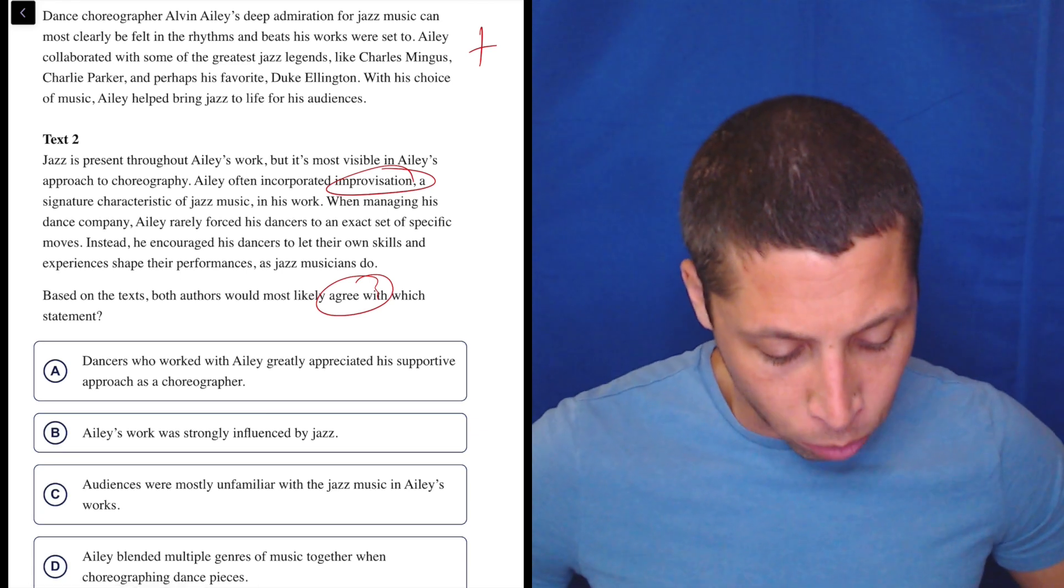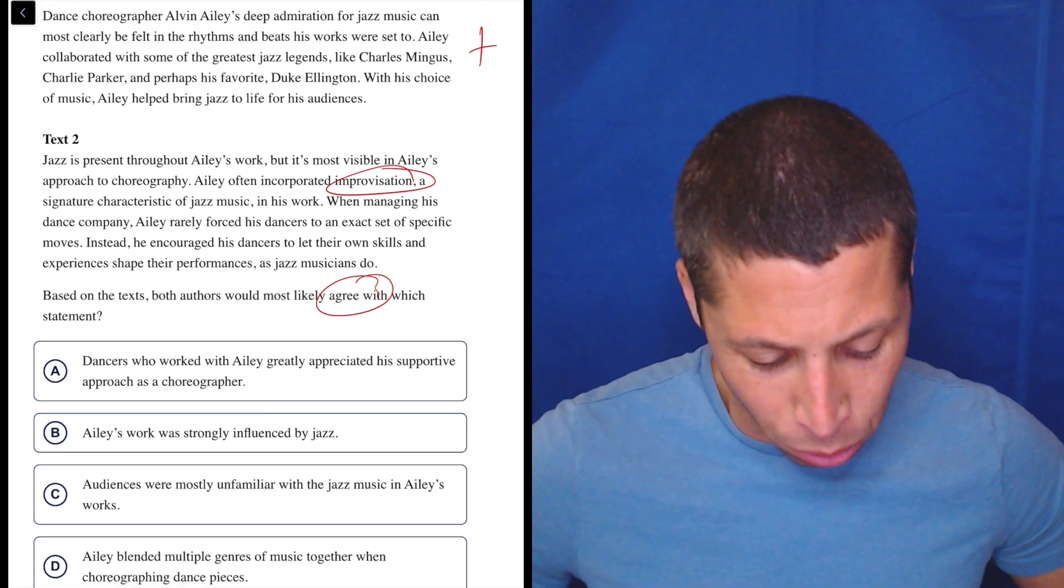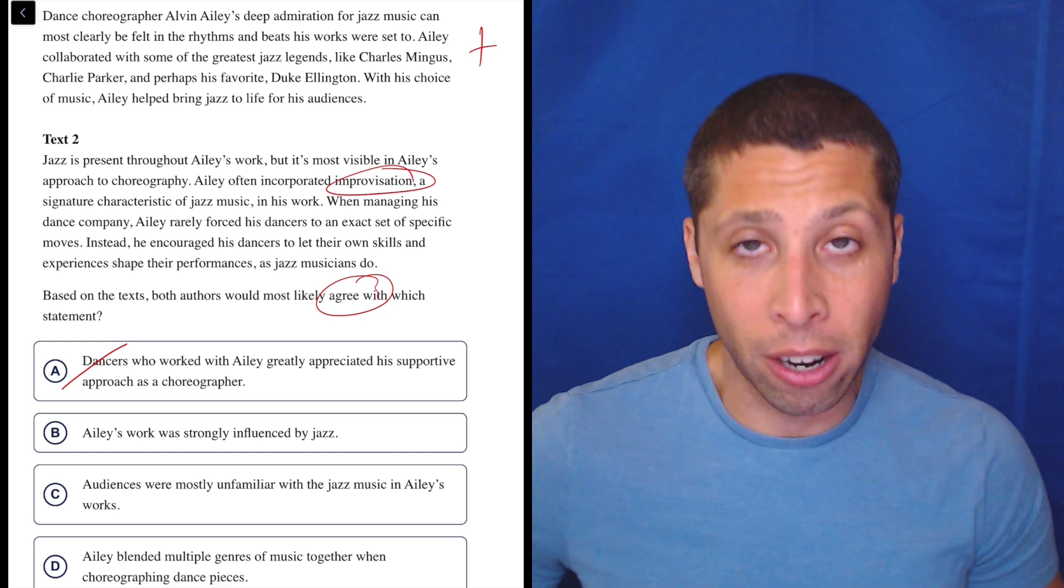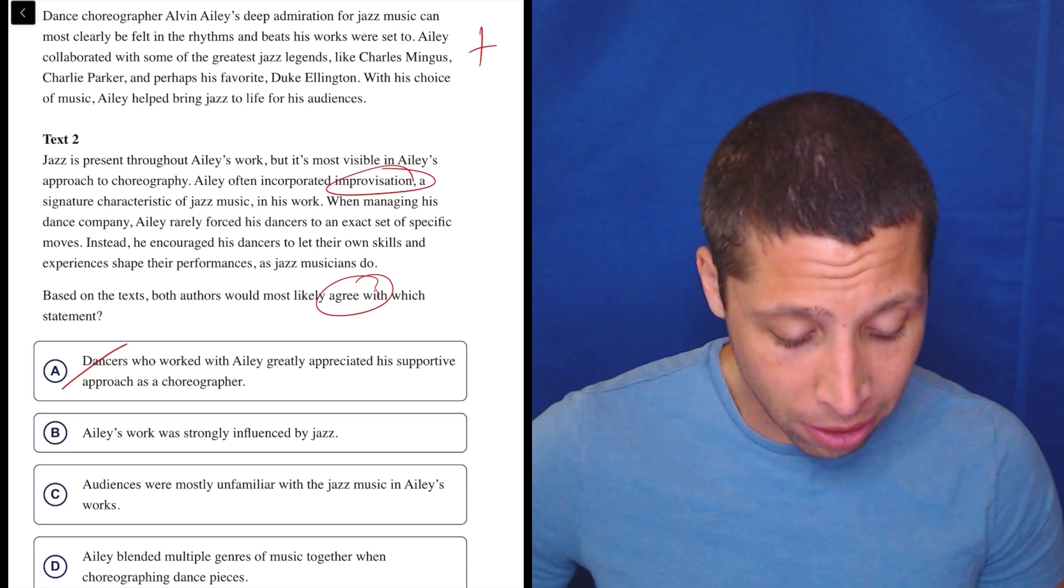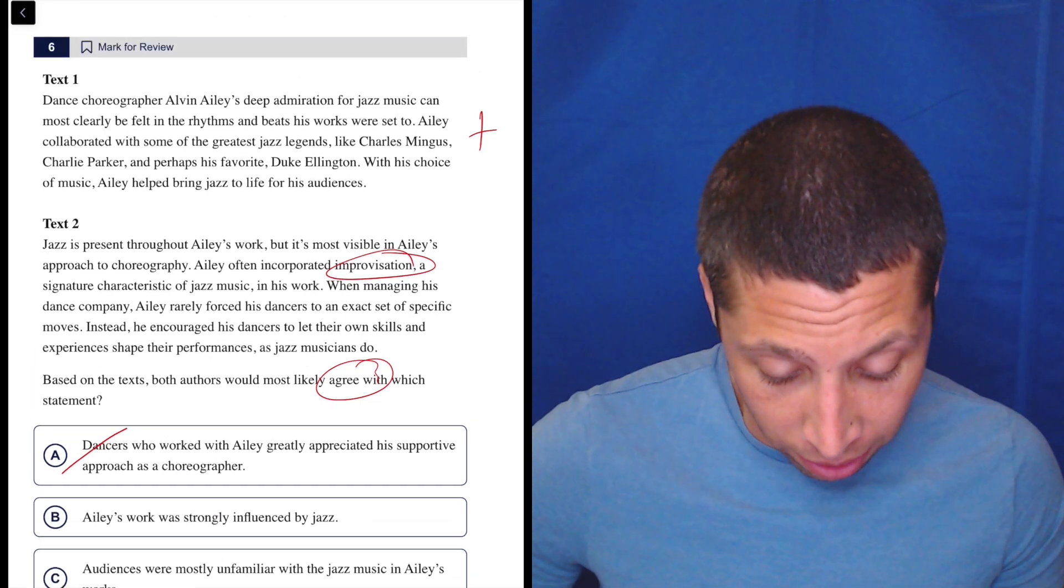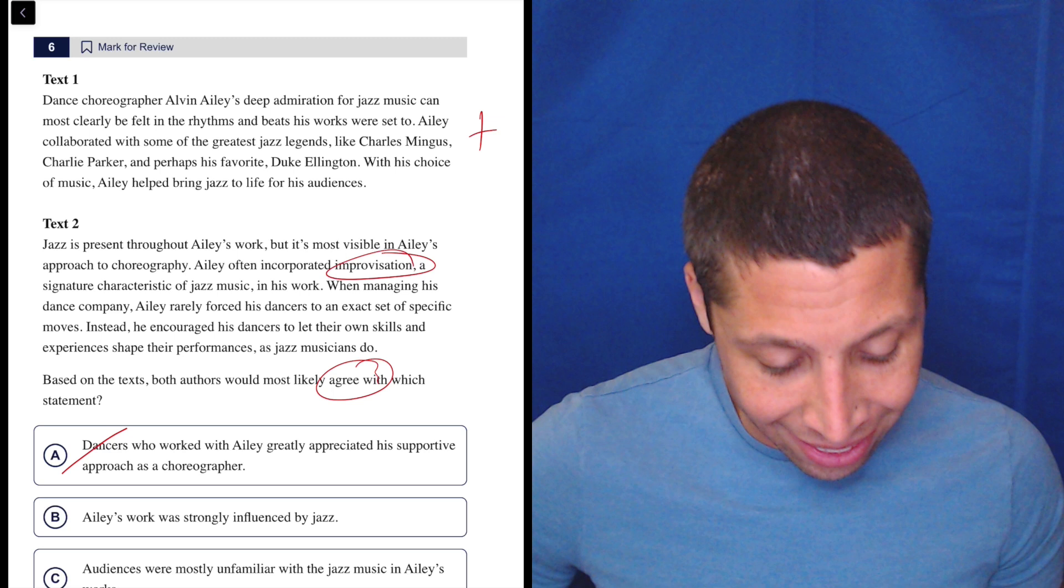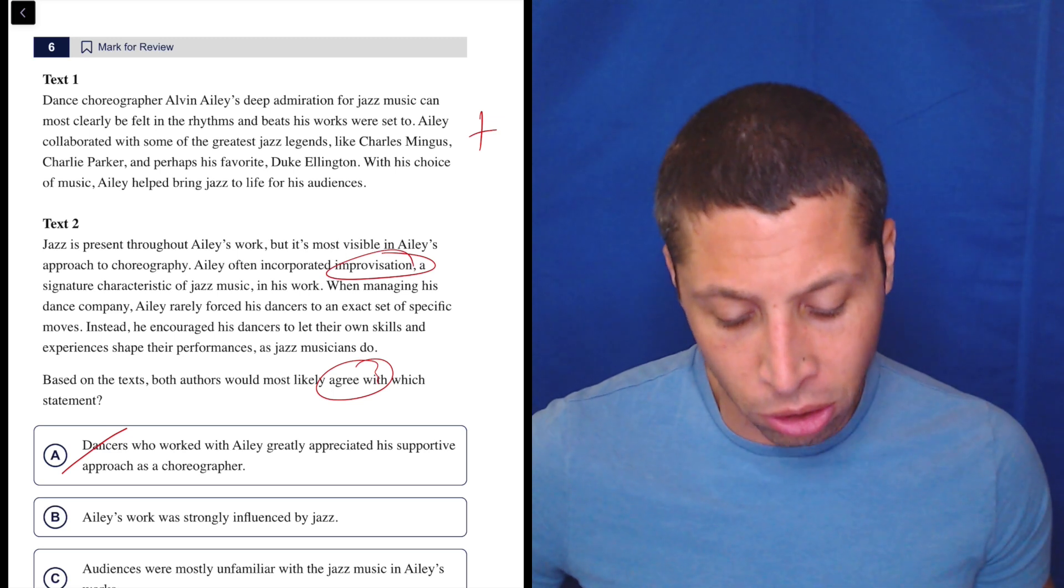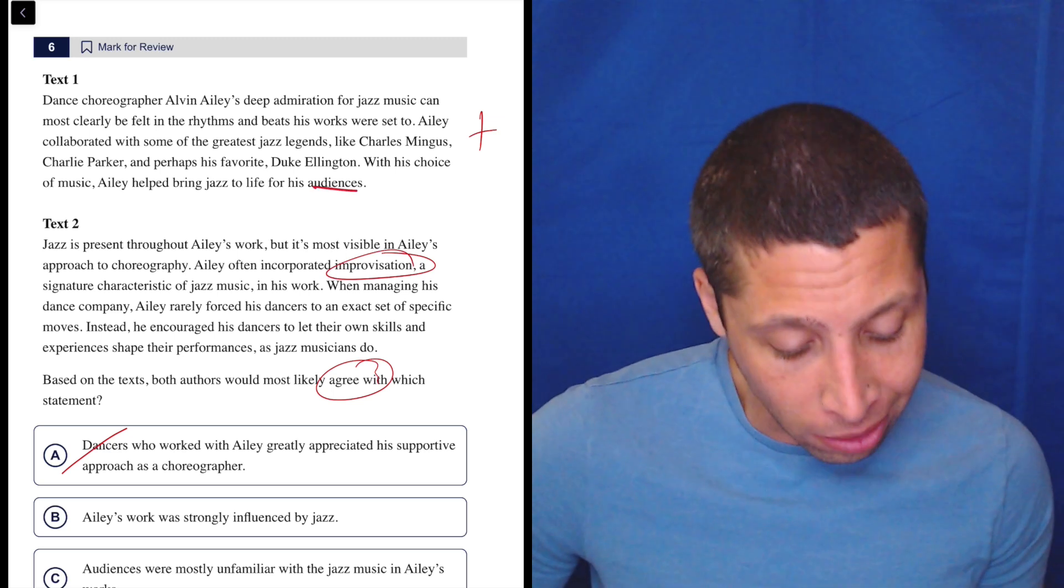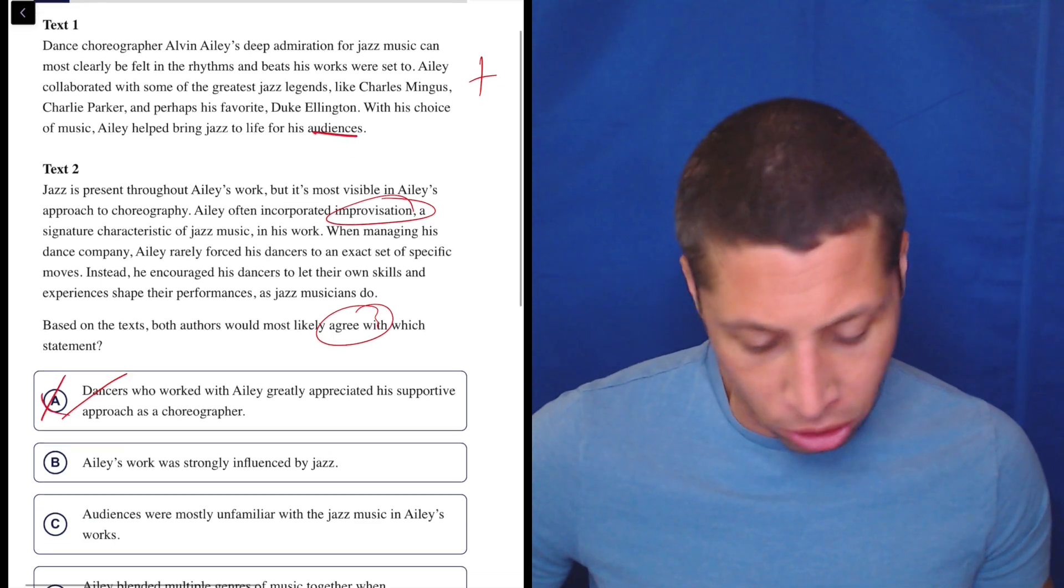Choice A: dancers who worked with Ailey greatly appreciated his supportive approach as a choreographer. Well, wrong main character. The dancers are not really talked about here, at least not in the first passage. They do say he's a choreographer, but it doesn't say what the dancers who worked with him wanted. This is just the wrong main character.